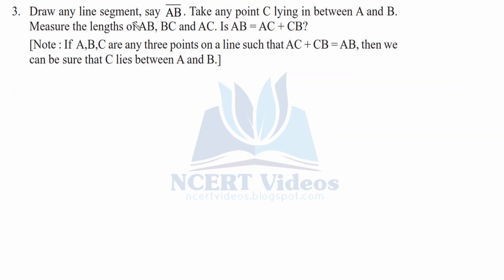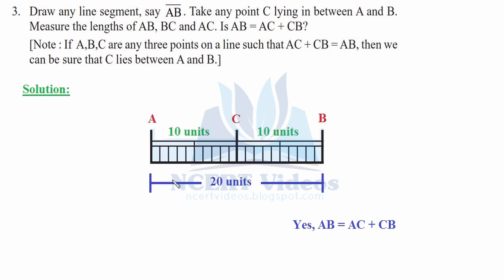Question three: draw any line segment AB, take any point C lying in between A and B, and measure the lengths of AB, CB, and AC. Is AB equal to AC plus CB? We will construct AB as 20 units. We take a point C in between A and B — 'in between' means the distances AC and CB would be equal.